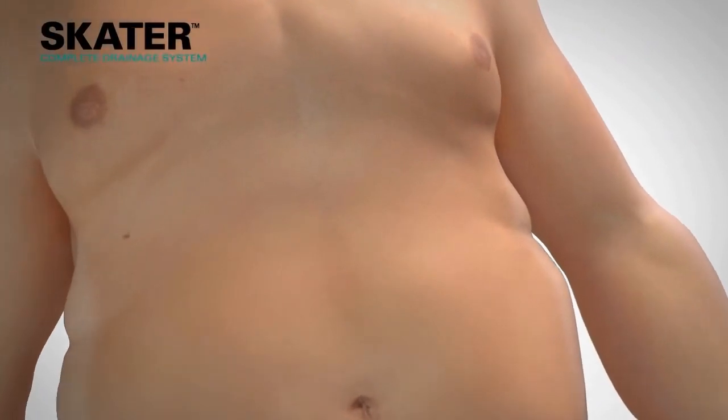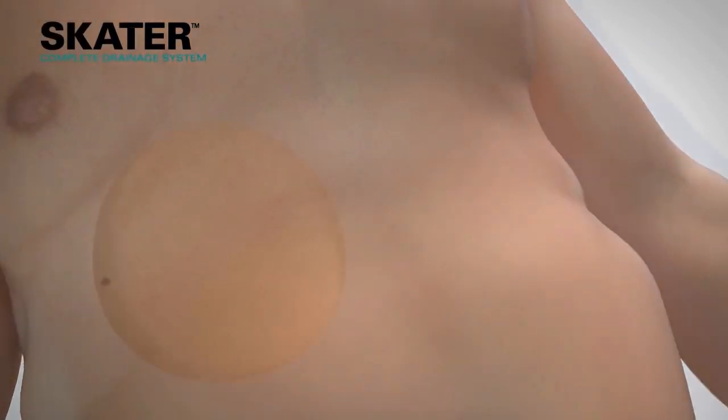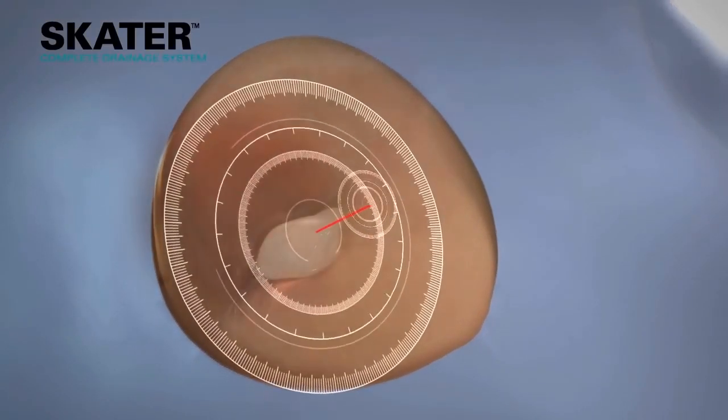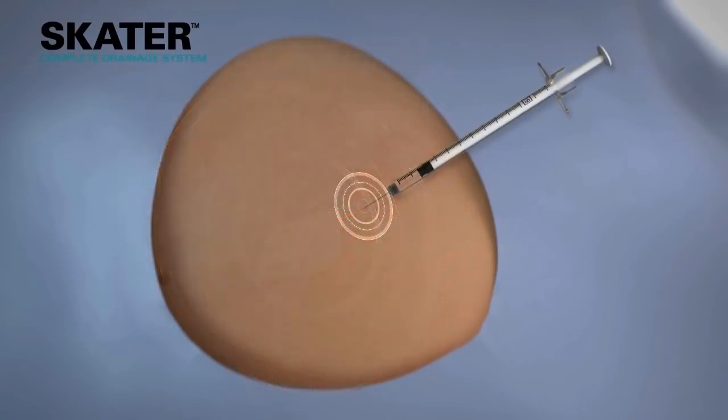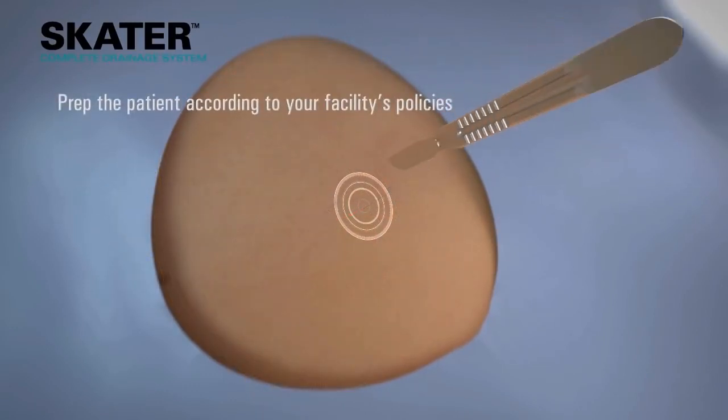The SCATER catheter placement procedure for abscess drainage is conducted under imaging via either the direct stick or over the wire method. Once the pocket of fluid has been targeted under imaging, local anesthesia is applied and a skin nick is created to insert the drainage catheter.